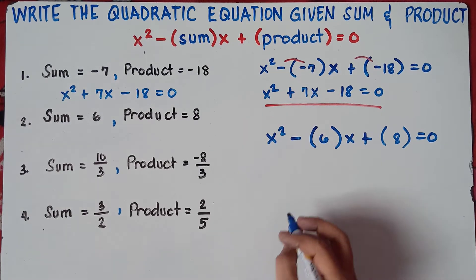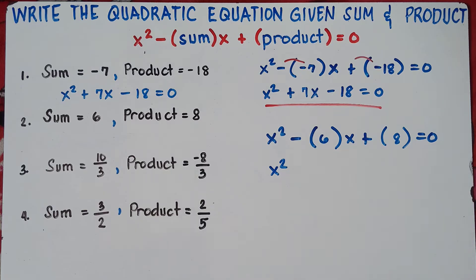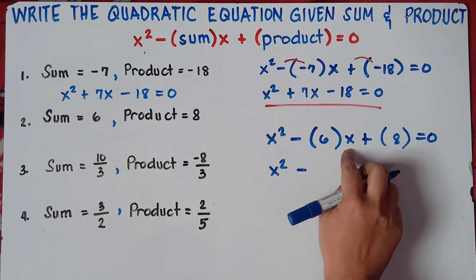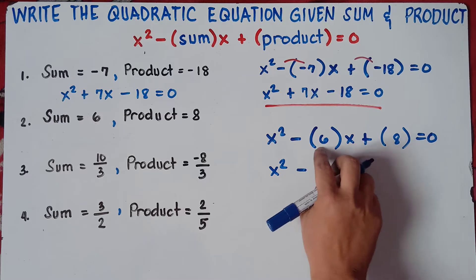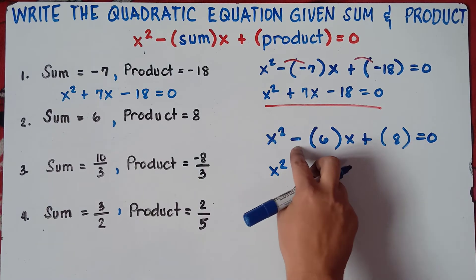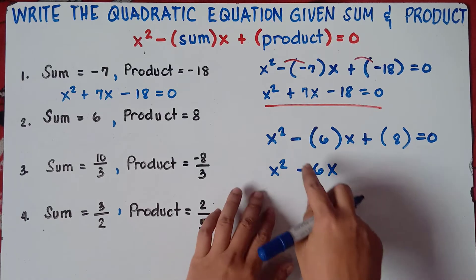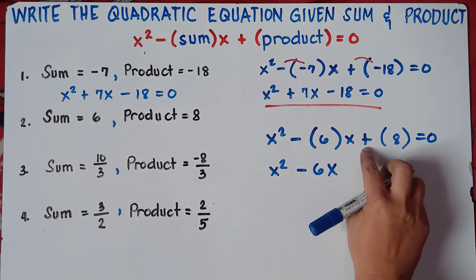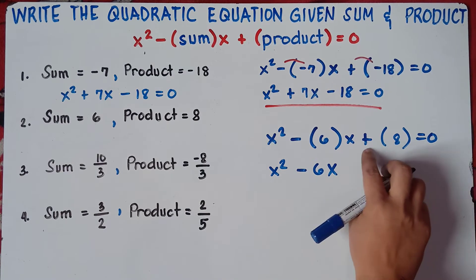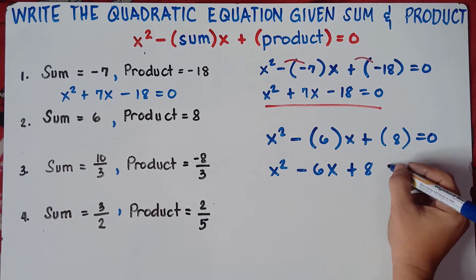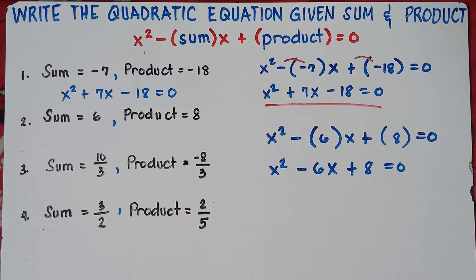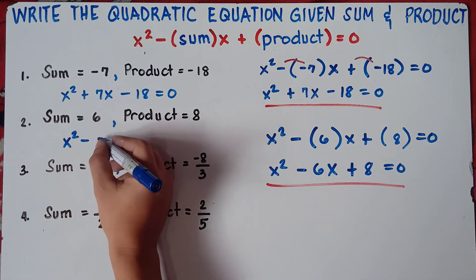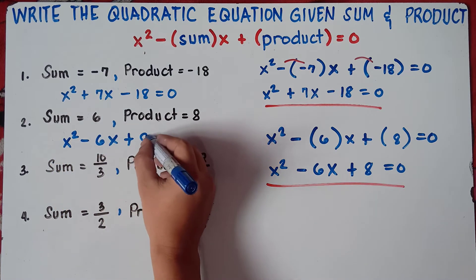Alright, and then you simplify. This will be x squared. Negative times positive is negative — that is negative 6 times x, that would be negative 6x. Then positive times positive 8, this is positive 8. That's the answer for number 2. Easy, right? For the sum and product, we have x squared minus 6x plus 8 equals 0.